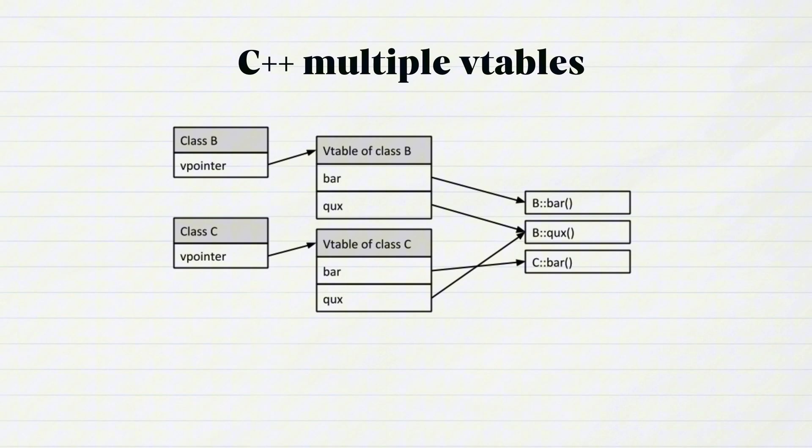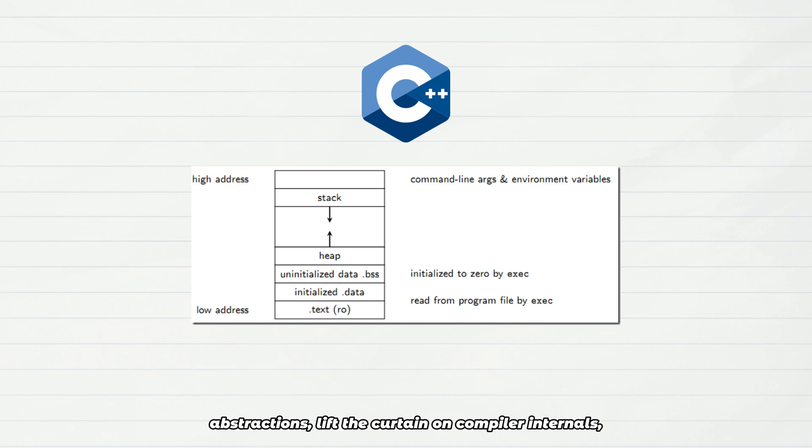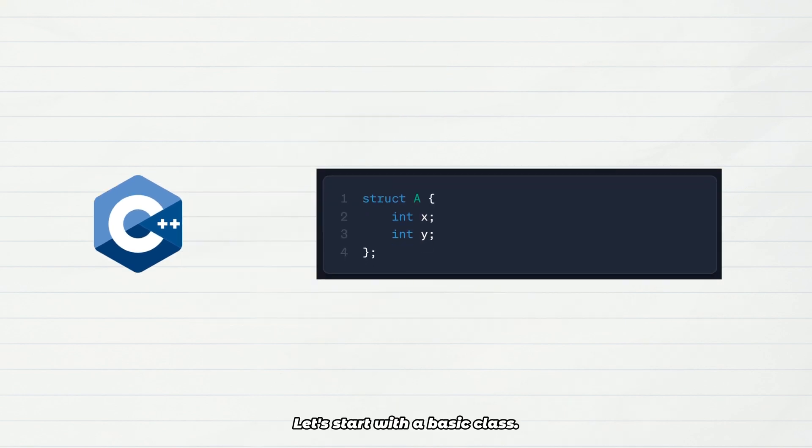Why do multiple vtables appear in the case of multiple inheritance? In today's video, we'll completely strip away syntactic sugar and OOP abstractions, lift the curtain on compiler internals, and examine the true memory layout of C++ objects from a memory perspective.